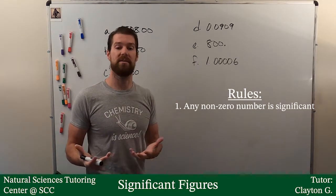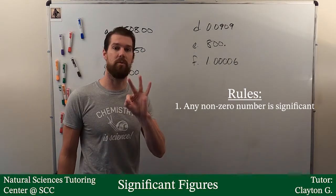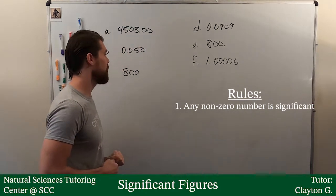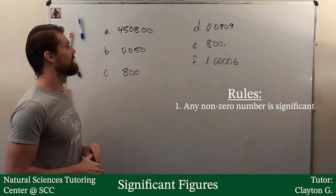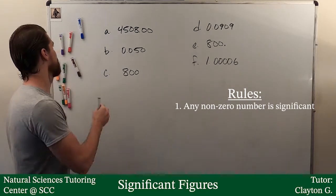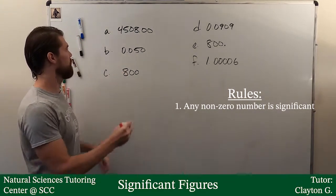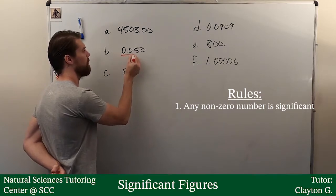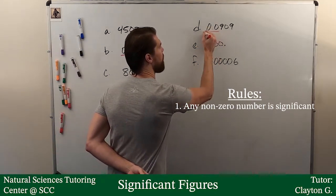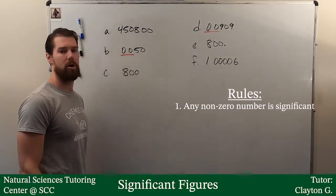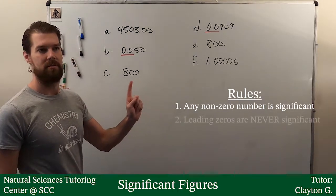Second of all, when we are talking about zeros, we have three rules we need to remember. So, first rule is that leading zeros, leading zeros, so let's find some leading zeros in here. There is a couple right there. There is two right there.